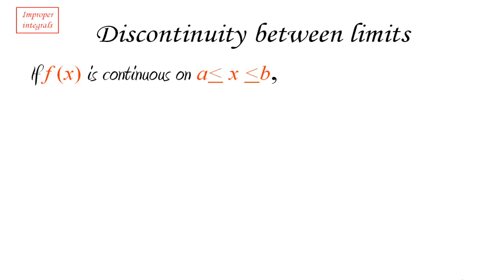So let's say that we have a function which is continuous all the way from A to B. A and B are both numbers and the function is continuous all the way from A to B except at some point in between.